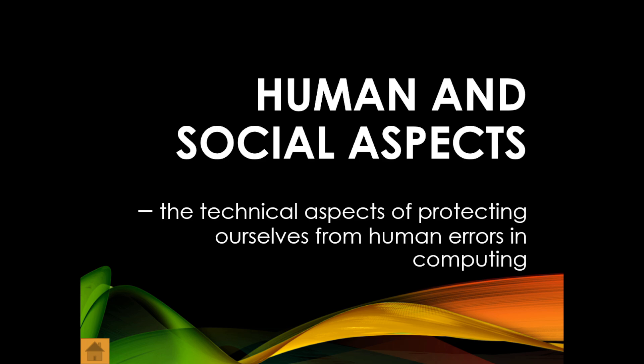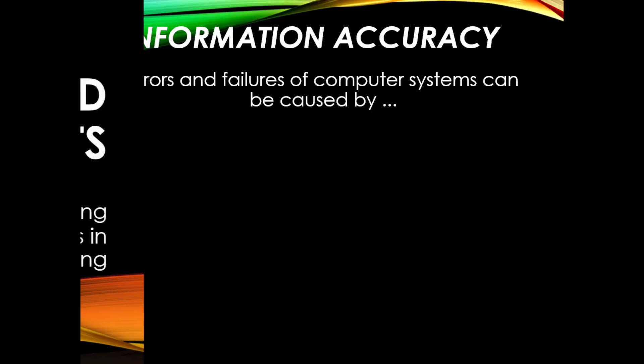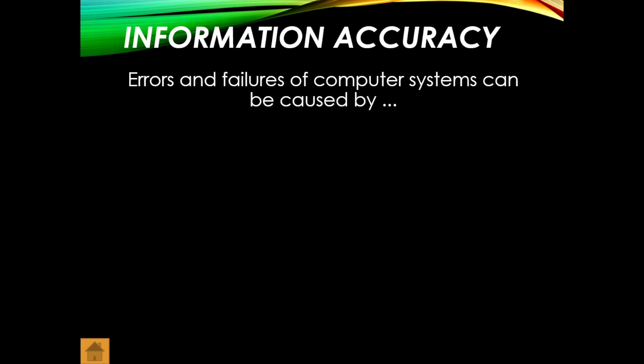The first thing we're looking at is the technical aspects of protecting ourselves from human errors in computing. Remember, the computer can only do what we tell it to do — unless it's AI. We want to talk about things like information accuracy. If you are capturing the data of an entire school — names, numbers, contact details, parental details — it's important that information be accurate, especially in the case of an emergency.